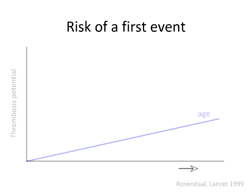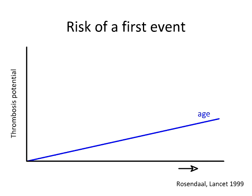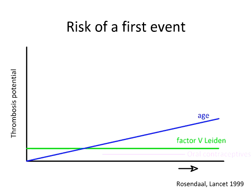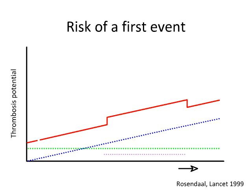I'll use the thrombosis potential model, first developed by Fritz Rosendaal in 1999. It shows on the y-axis the thrombosis potential of one individual — the cumulative likelihood that a person will develop a thrombotic event at a certain point in time — and on the x-axis, time. A person exposed only to age will see his thrombosis potential gradually rise. If this person also has Factor V Leiden, that adds to his thrombosis potential. If she then uses oral contraceptives for a period, that adds again, and her thrombosis potential goes up further during that period.